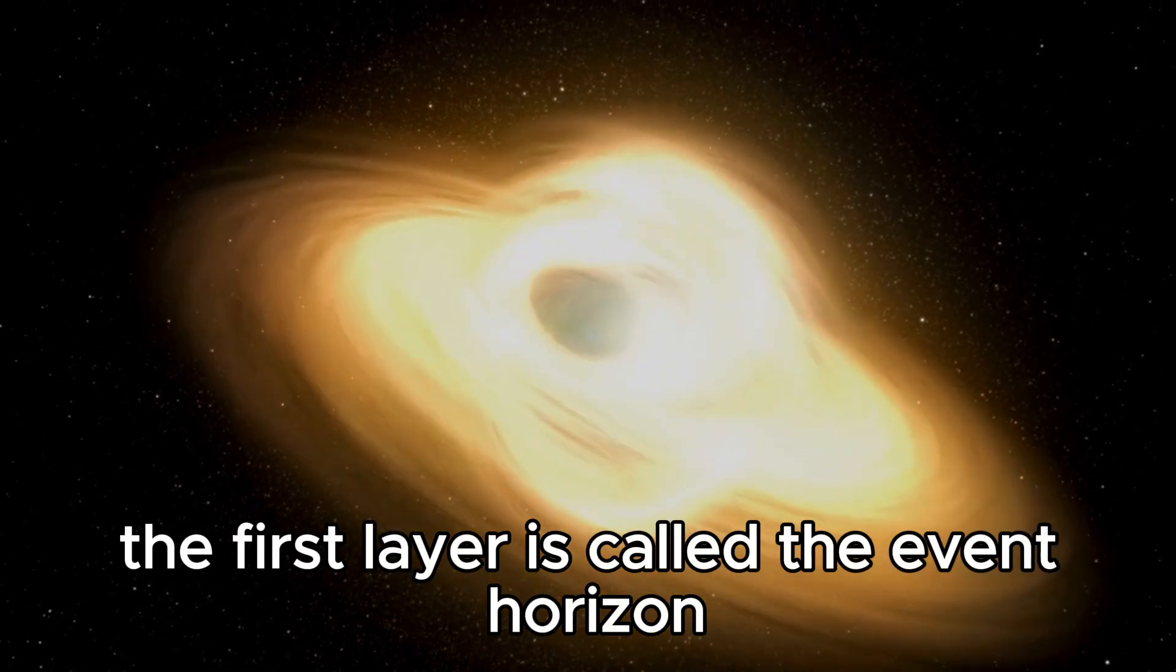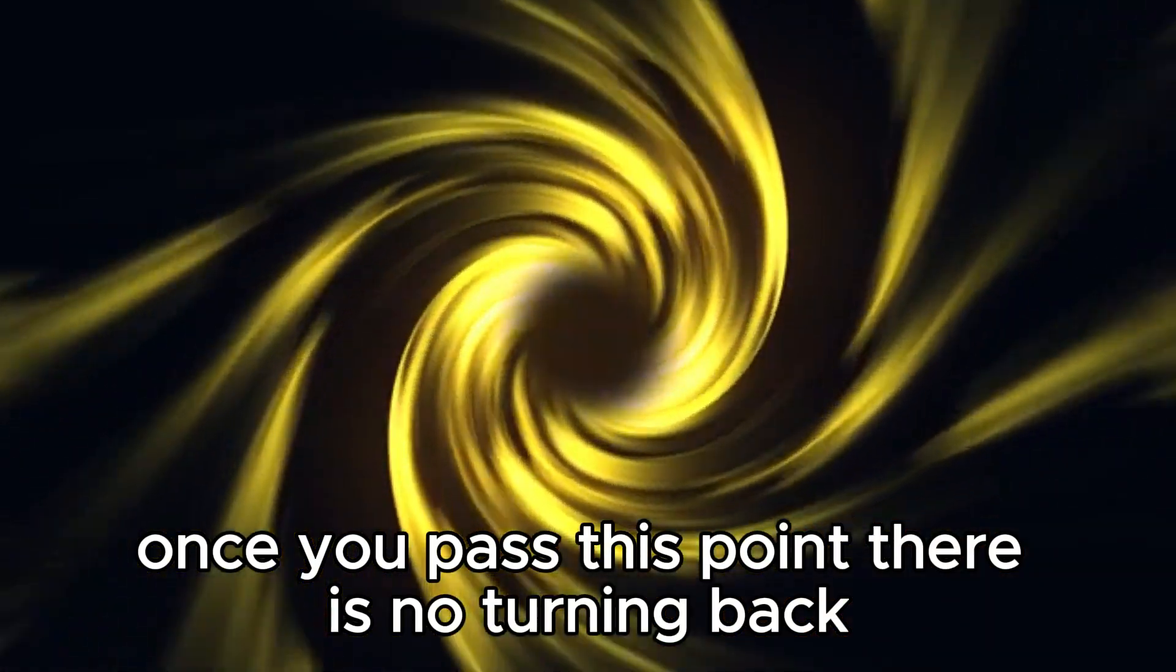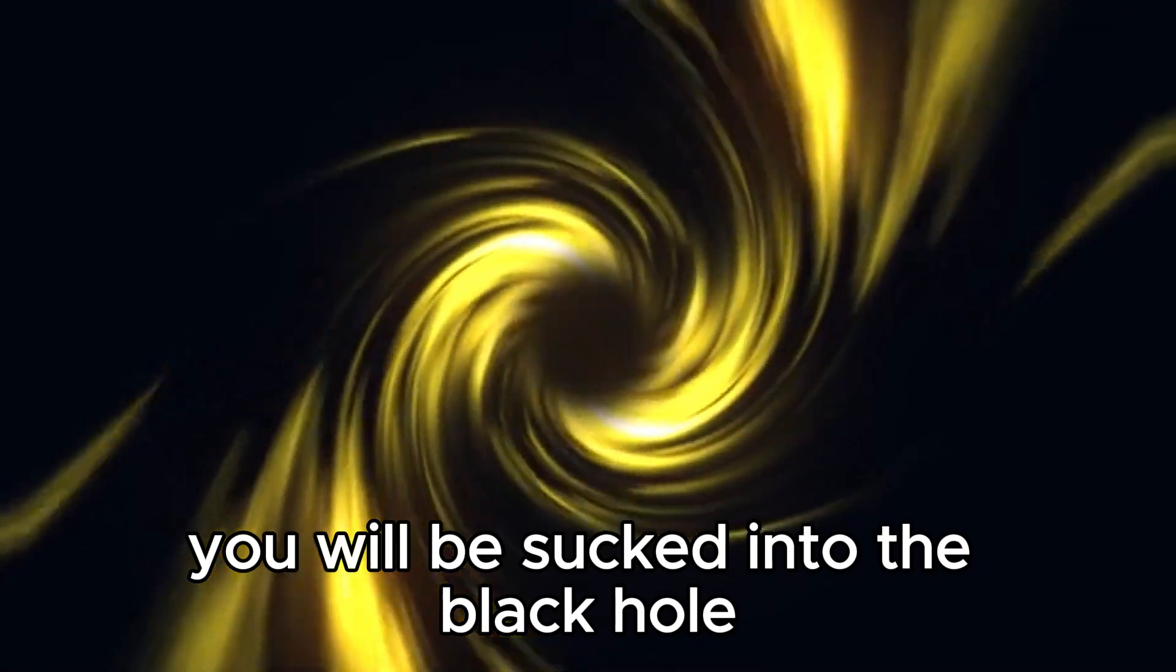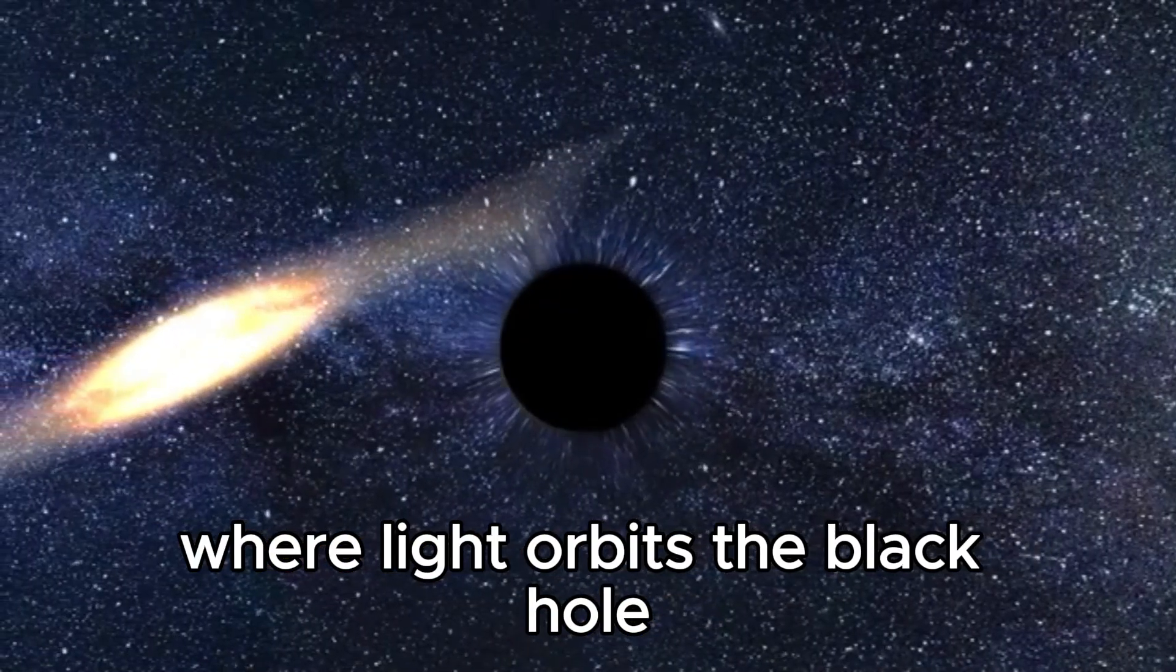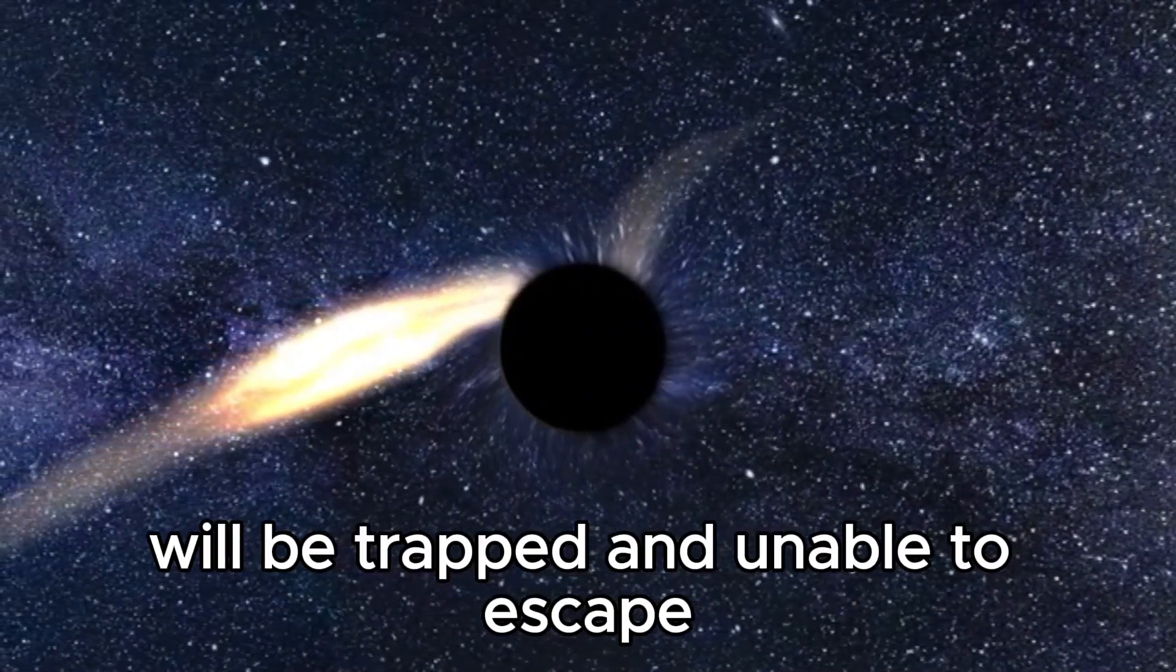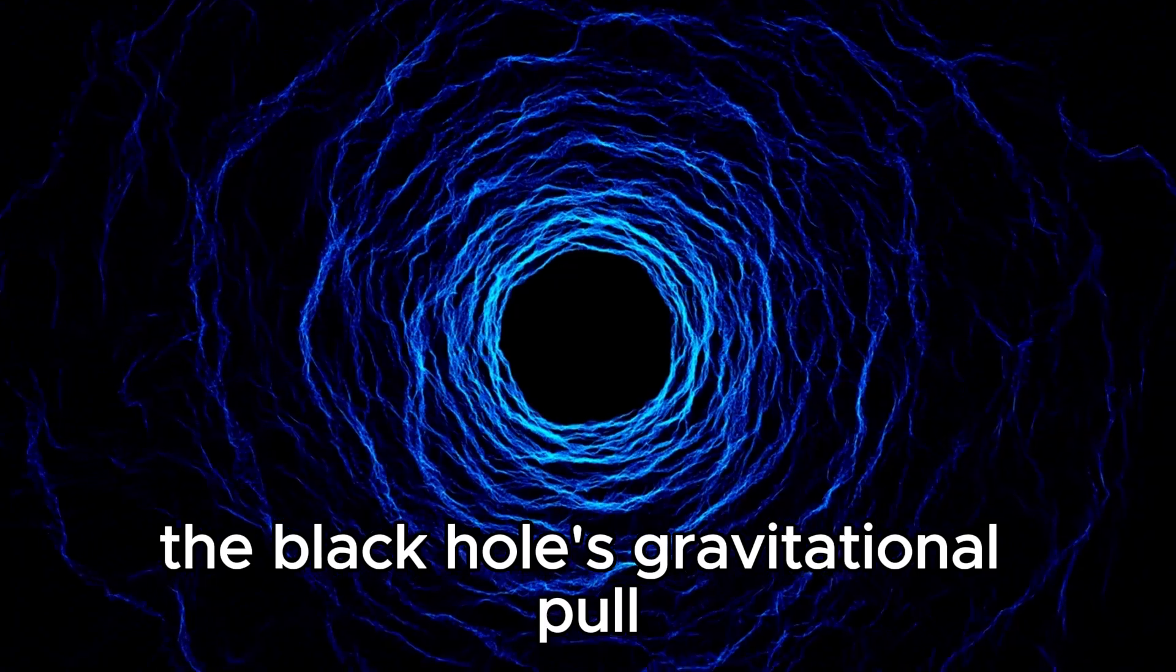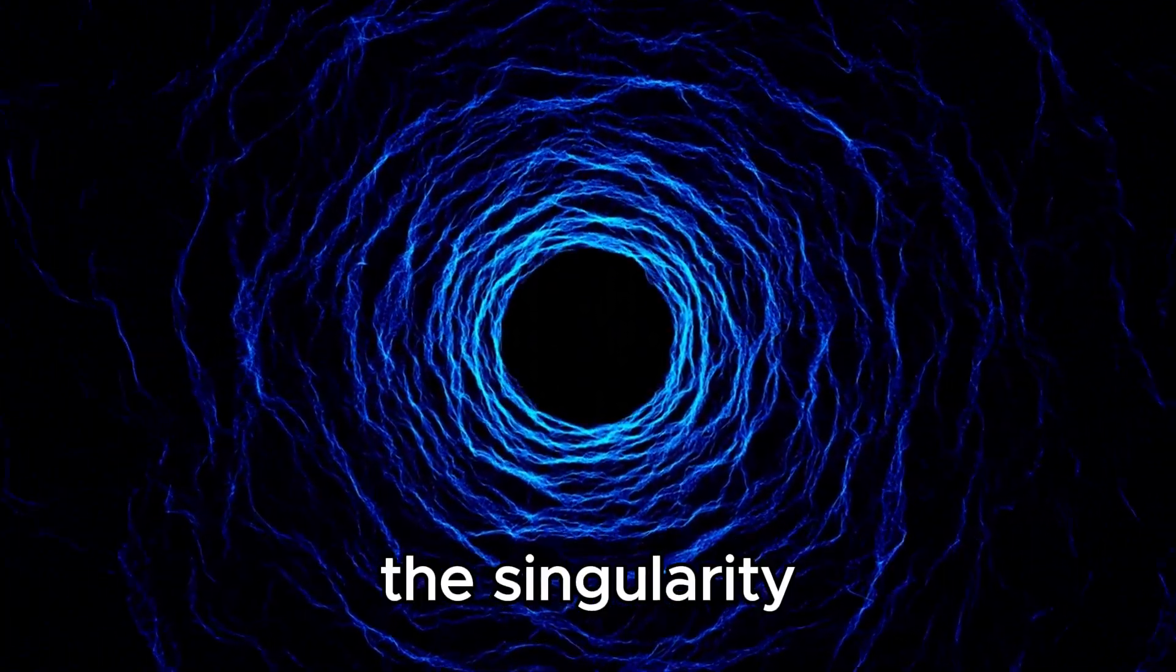The first layer is called the event horizon. Once you pass this point, there is no turning back. You will be sucked into the black hole. The second layer is the photon sphere, where light orbits the black hole. Any light entering this region will be trapped and unable to escape the black hole's gravitational pull. Finally, we come to the third layer, the singularity.